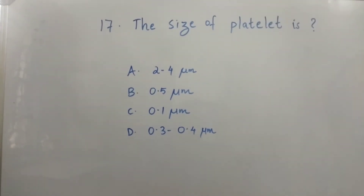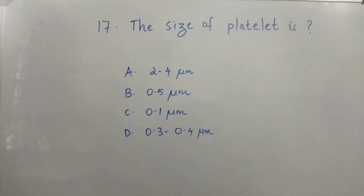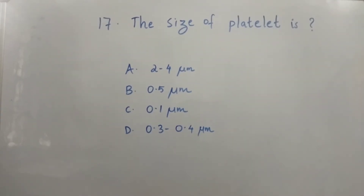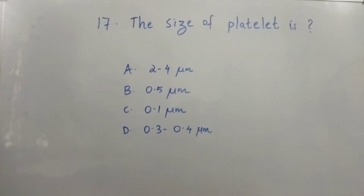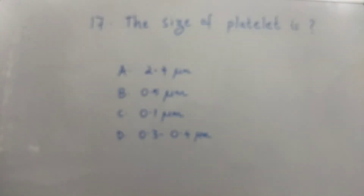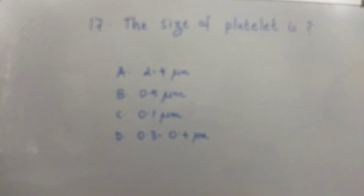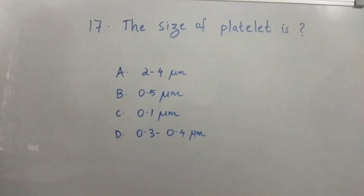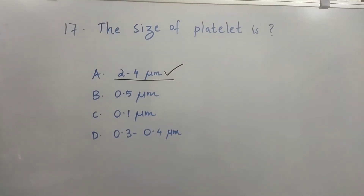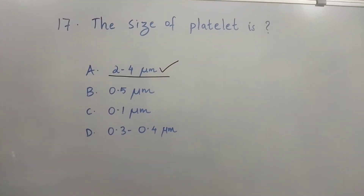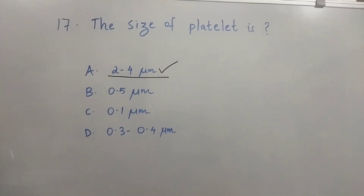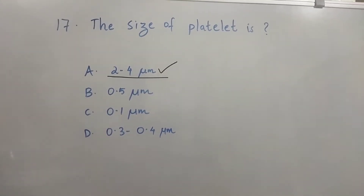Question number 17: The size of platelet is — Option A: 2 to 4 micrometers. Option B: 0 to 5 micrometers. Option C: 0.1 to 1 micrometer. Option D: 0.3 to 0.4 micrometers. The right answer is Option A, 2 to 4 micrometers. The size of a platelet is 2 to 4 micrometers.